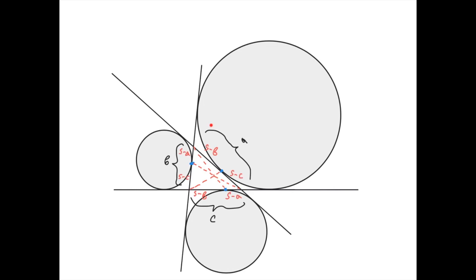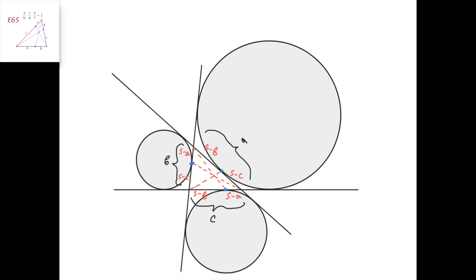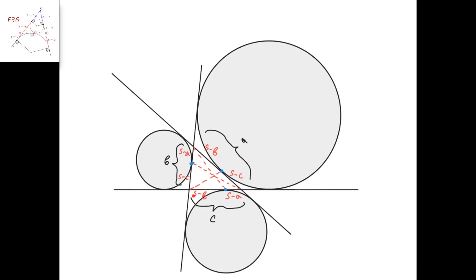Let's label the sides a, b, and c. Now we can use Ceva's theorem, because we know that this segment's length is s-b, this is s-a, this is s-c, s-b, s-a, and s-c, where s is the semi-perimeter.